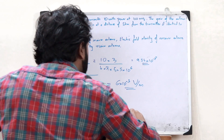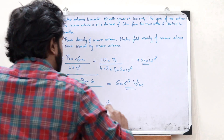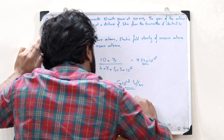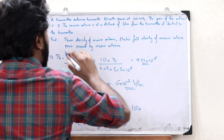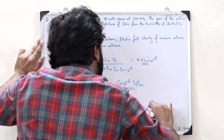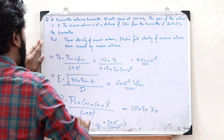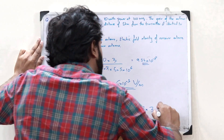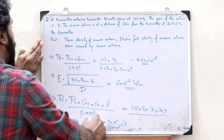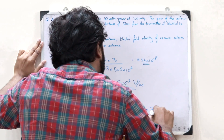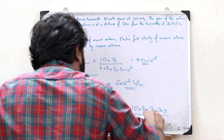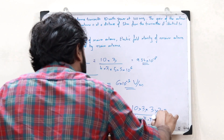Substituting into the Friis equation: P_r = 10 × 3 × 3 × (3×3) / (4π × 5×10³)². Both antennas have gain 3 since they are identical. Working through the calculation gives P_r = 2.0538×10⁻⁷ watts.